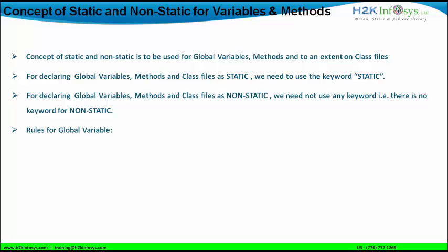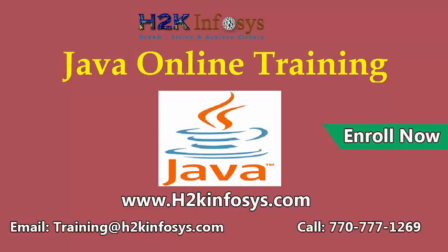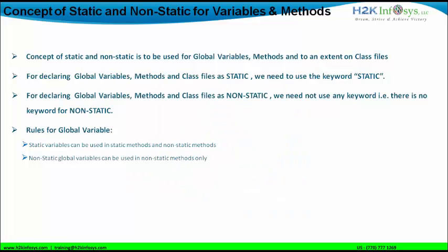Now, rules for global variables. If a global variable is static, then it can be used in static methods and non-static methods. Similarly, if a global variable is non-static, it can be used in non-static methods only. This rule — that non-static global variables can be used in non-static methods only — is a stringent rule.